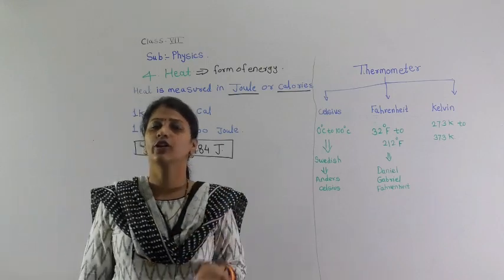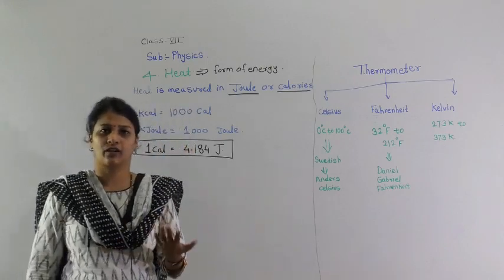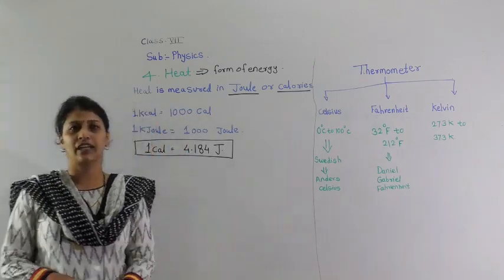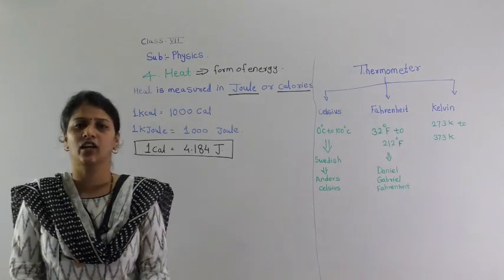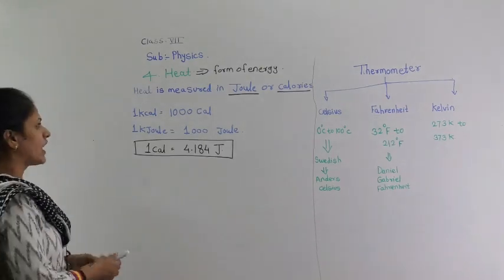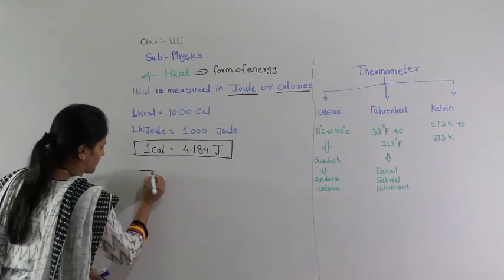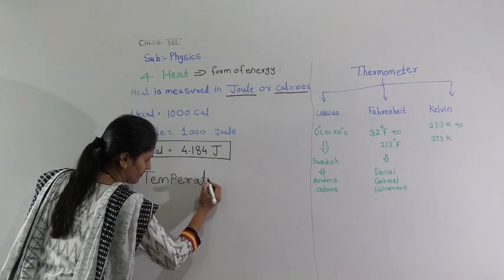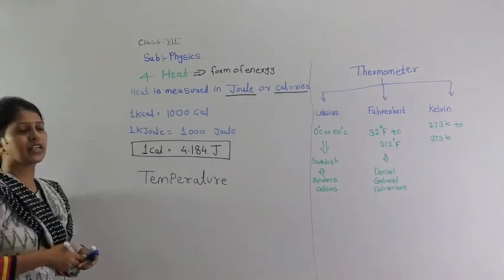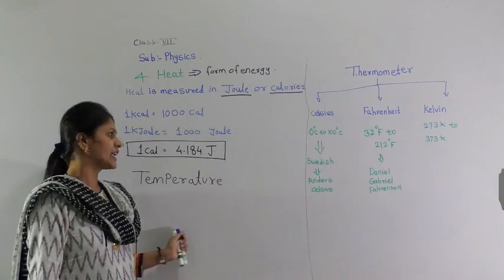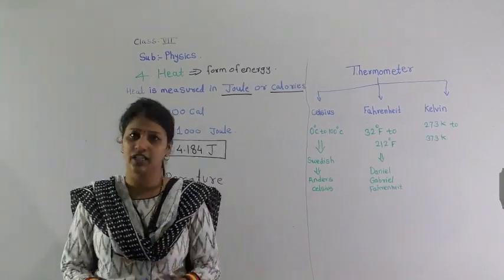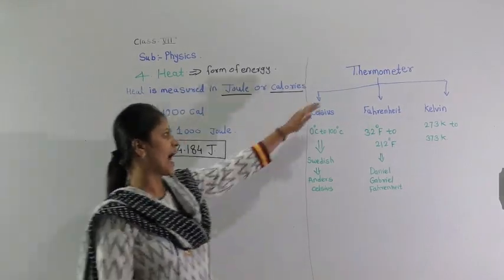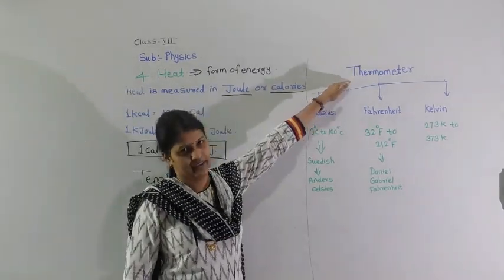If we want to calculate the degree of hotness and coldness, we need temperature. We call the degree of hotness and coldness as temperature. And to measure the temperature, we need an instrument — that instrument is called a thermometer.